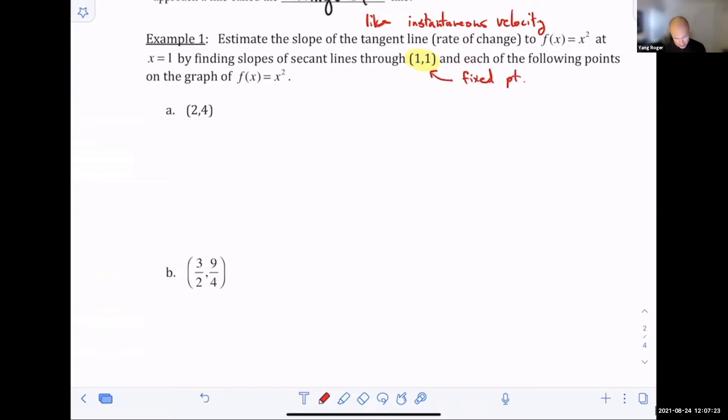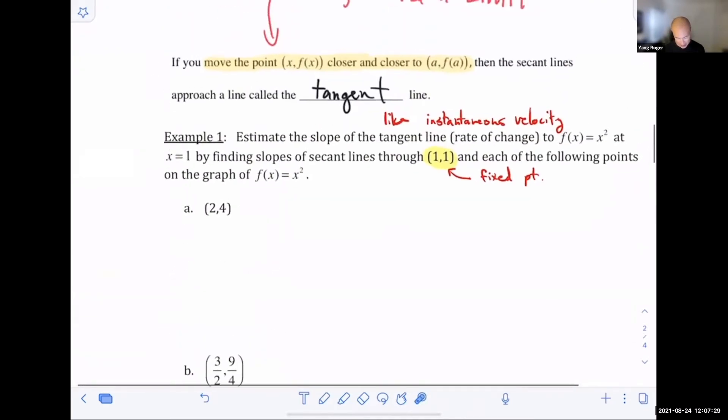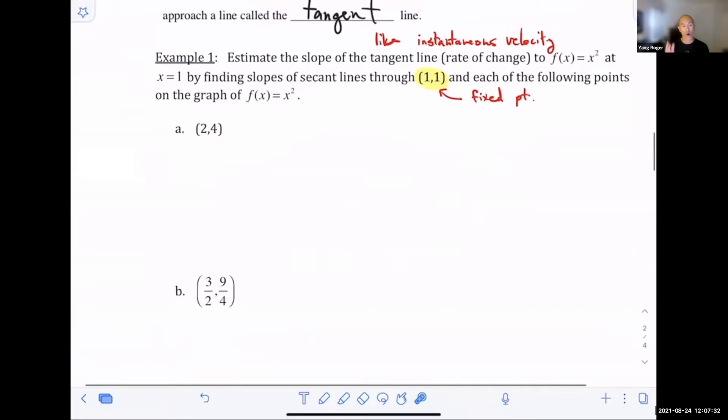And these A, B, C, D, this is the second point. Our goal is to try to see where it looks like that slope is going. So we're just going to calculate a bunch of slopes here. Let's do it.